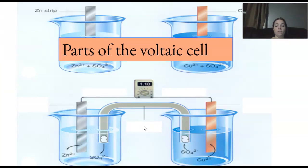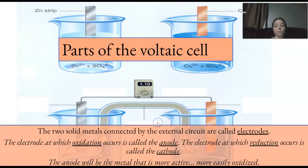What are parts of a voltaic cell? So, right here we have a zinc strip, we have a copper strip, and we have sulfate right there. There are two metal solids connected by an external circuit, right up here, called electrodes. The electrode at which the oxidation occurs is the anode. So, Leo loses electrons, oxidation.